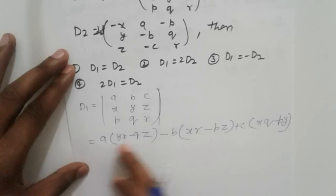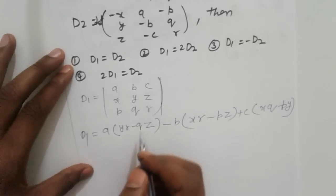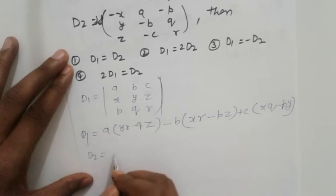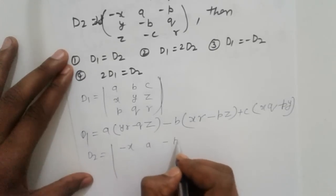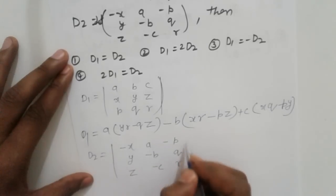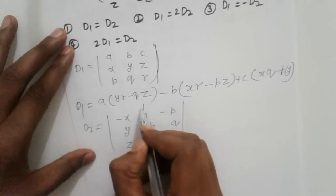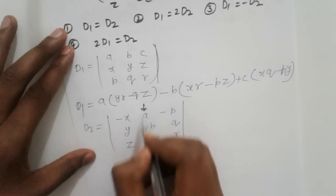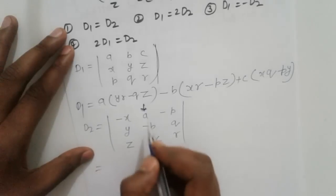Next, we expand D2. D2 equals the determinant of matrix with elements -X, A, -P in the first row, Y, -B, Z in the second row, and -C, Q, R in the third row. Now we expand according to the second column.